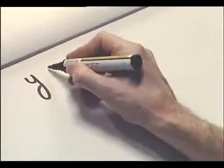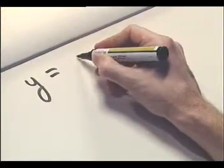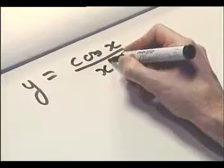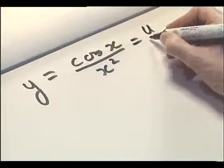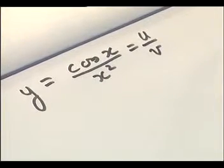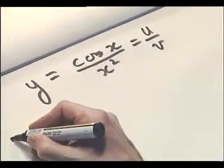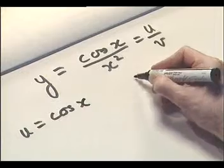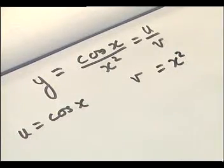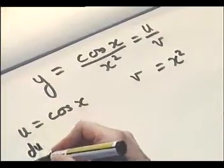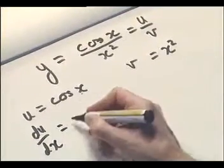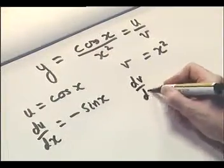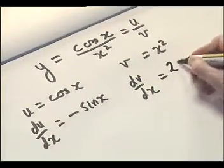Let's have a look at this example: y equals cos x over x squared. We've identified this as being u over v. So u is cos x, and v is x squared. We can write down their derivatives: du/dx is minus sin x, and dv/dx is 2x.